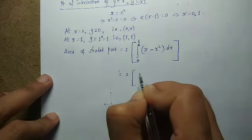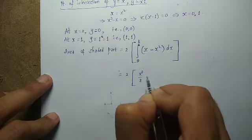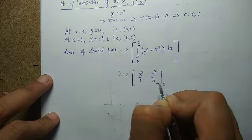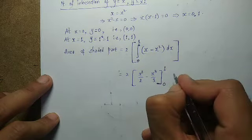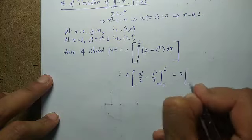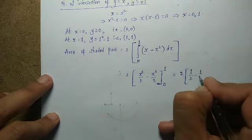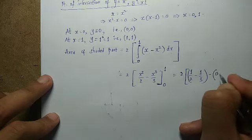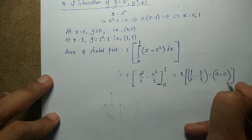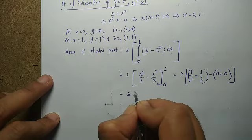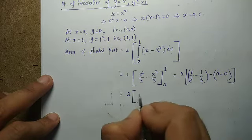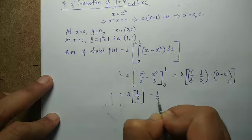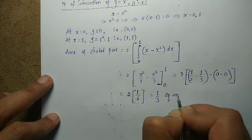Integrating: 2 × [x²/2 − x³/3] from 0 to 1 = 2 × (1/2 − 1/3) = 2 × 1/6 = 1/3 square units.